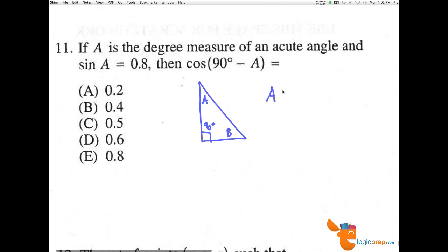We know that if A plus B, and this is a rule, equals 90, that the sine of the one angle will equal the cosine of the other angle. And the opposite is also true. The cosine of A will equal the sine of B.